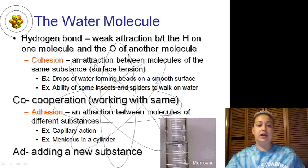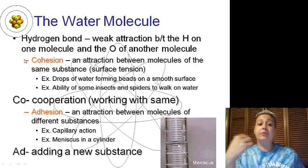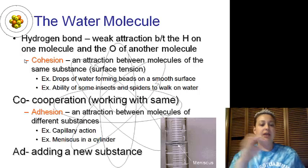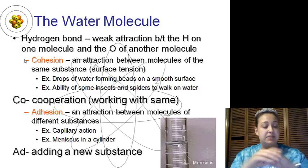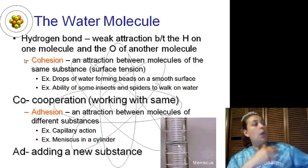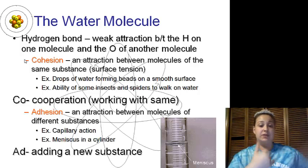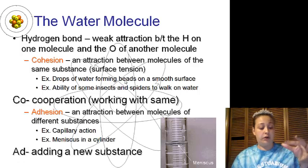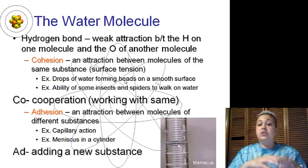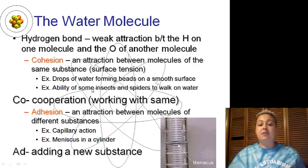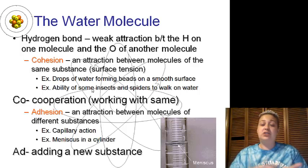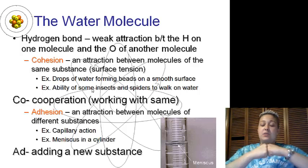Water being polar allows it to have cohesion, or an attraction between molecules of the same substance. You can remember that cohesion is of the same substance - co is cooperation. If you're cooperating with somebody, you're cooperating with a person, same substance. This is like drops of water forming beads on the surface, or if you drop water onto a penny it will bubble up. That is also surface tension. The ability of some insects to walk across water is due to its surface tension. Their pads do not actually break the surface tension, do not break the water molecules apart.